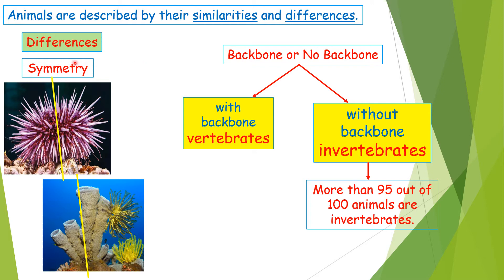The first difference is symmetry — whether animals have symmetry or not. Here we have two examples of two different kinds of animals. The first one is a sea urchin. Let's draw an imaginary line in the middle of this animal. Do you notice that this part of its body looks like the other part? Yes — so it has symmetry.